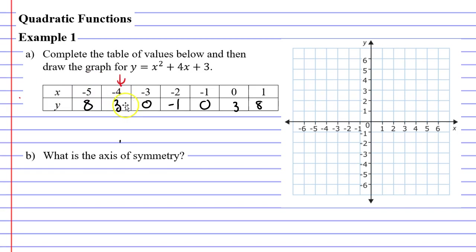When x is negative 4, y is 3. So that would plot about there. When x is negative 3, y is 0. It goes right on the x-axis.